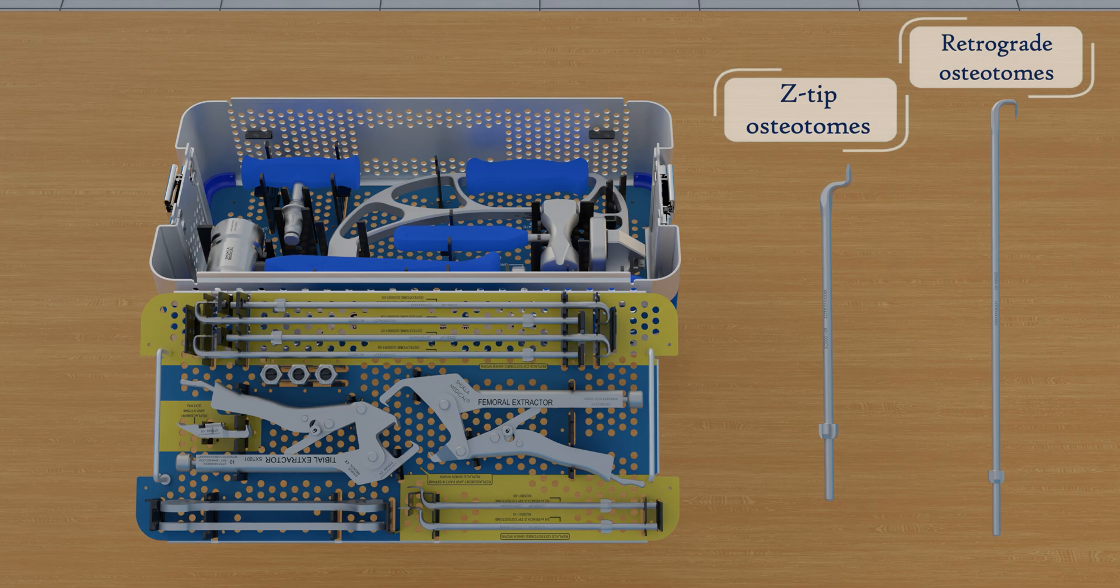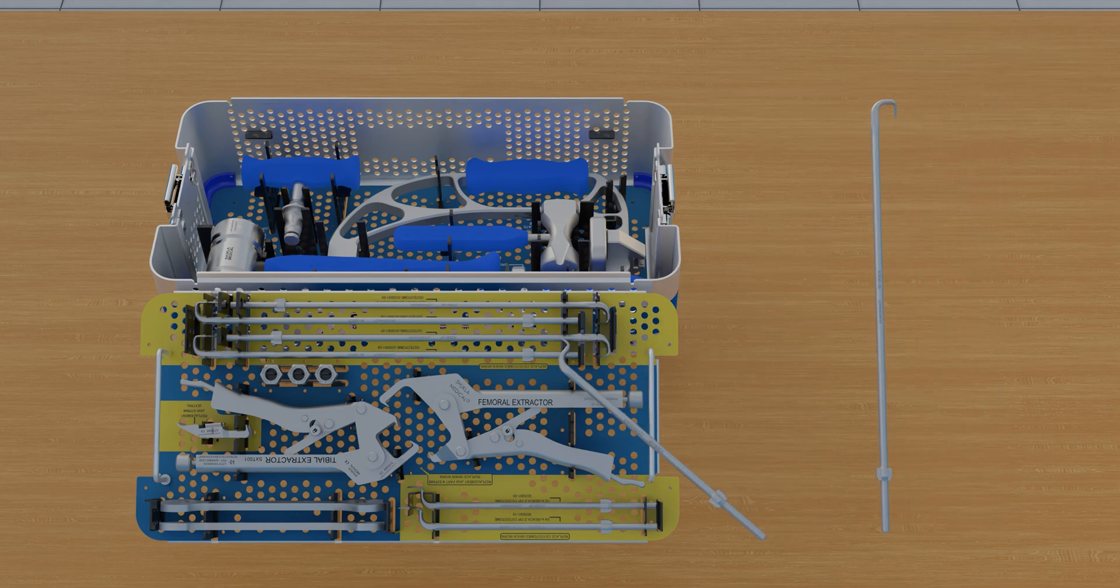Z-tip osteotomes access the femoral and tibial soft tissue corners, while retrograde osteotomes target the posterior tibial notches.